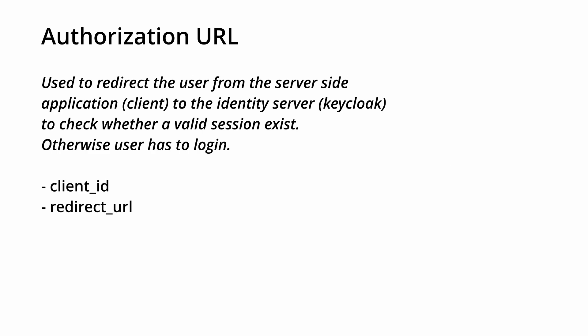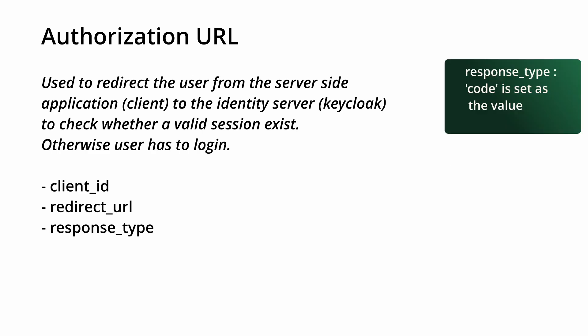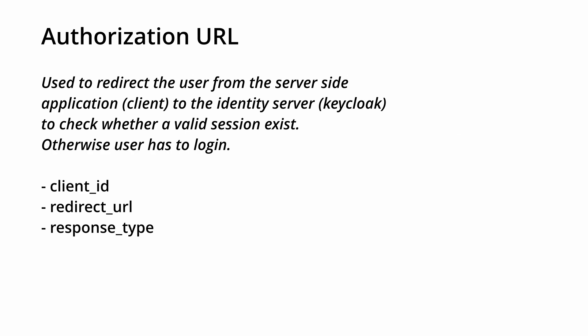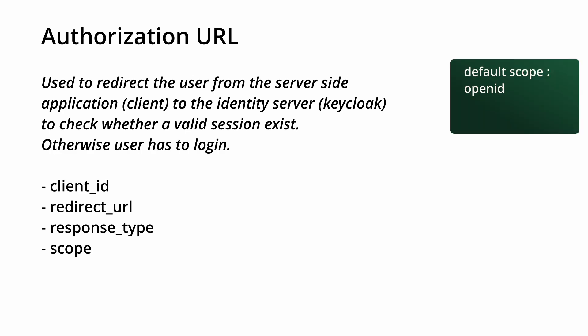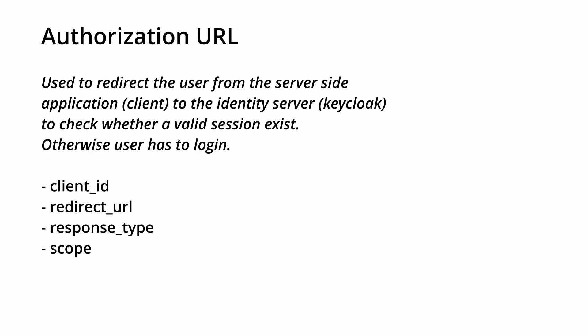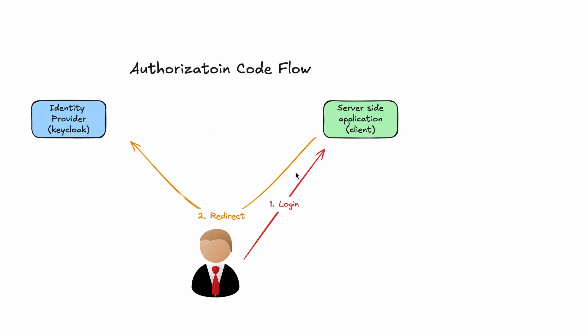Then there is response type, which is set to 'code' since we are using authorization code flow. There is also scope, which controls what kind of attributes should be in the access and ID tokens. The default scope is set to 'openid'. In addition, you can configure multiple scopes in the identity provider, and multiple default scopes are also accepted.